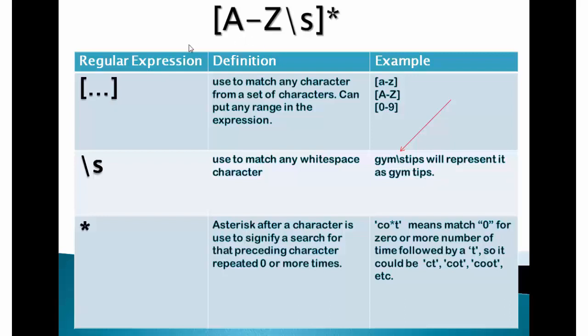Let me now explain the purpose of this asterisk outside square brackets. Asterisk after a character is used to signify a search for that preceding character repeated 0 or more times. For example, in the word cot, if you put an asterisk before t, it means it matches o for 0 or more number of times followed by a t. Like it can become ct or cot or coot etc.